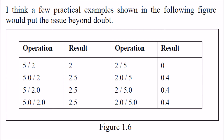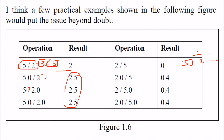Practical examples: 5 divided by 2 - since both are integers, the result is 2 (0.5 is truncated). For 5.0 divided by 2, the 2 becomes 2.0, giving 2.5. For 2 divided by 5, both integers, the actual result 0.4 is truncated to 0. For 2.0 divided by 5, the 5 is converted to 5.0, and you get 0.4.